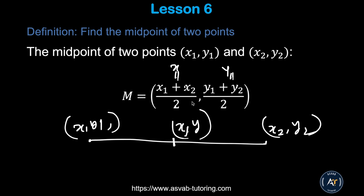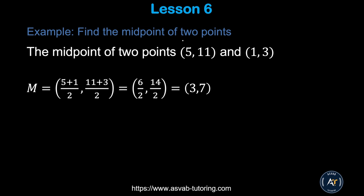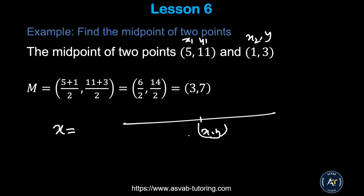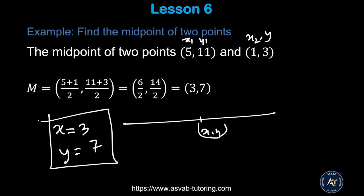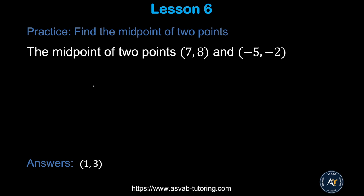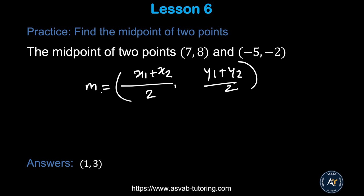Let's apply the midpoint formula to a real problem. Label your points x1, y1 and x2, y2. Find x = (x1 + x2) / 2 and y = (y1 + y2) / 2. After simplifying, x = 3 and y = 7. Pause the video and try by yourself. Use M = ((x1 + x2)/2, (y1 + y2)/2), plug in the values, and make sure you get the correct answer.